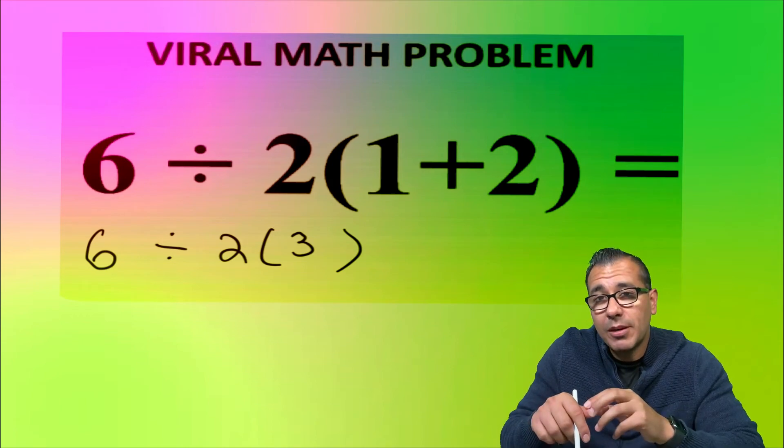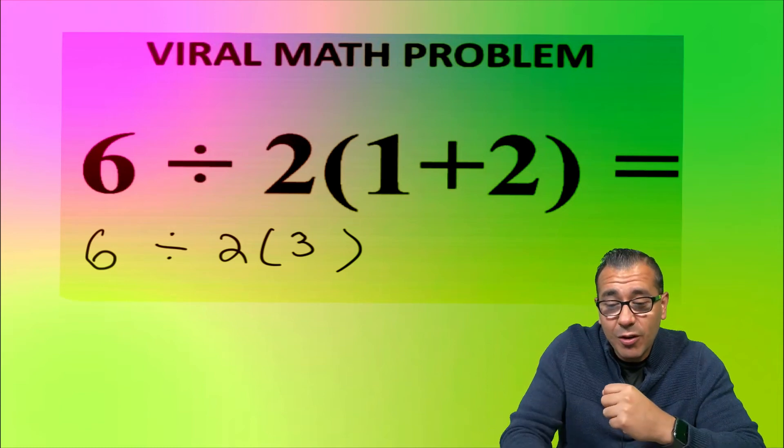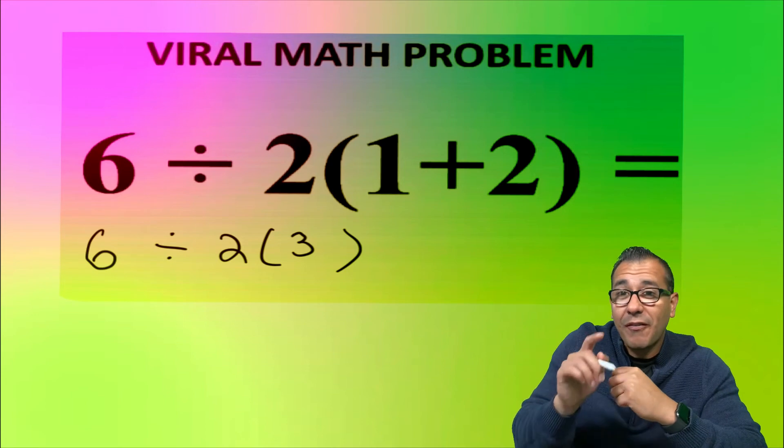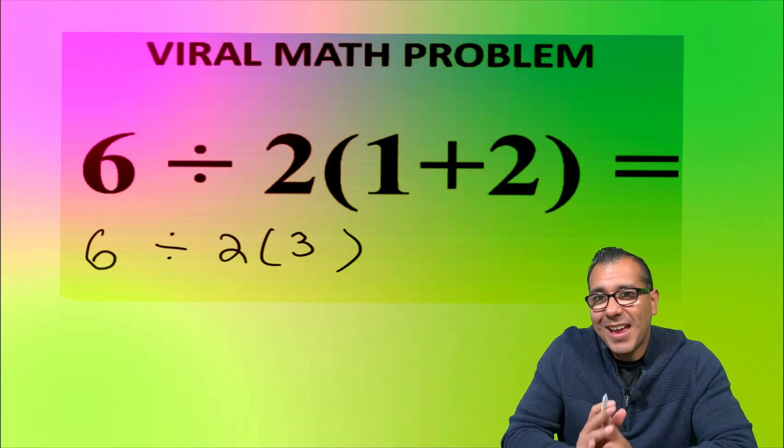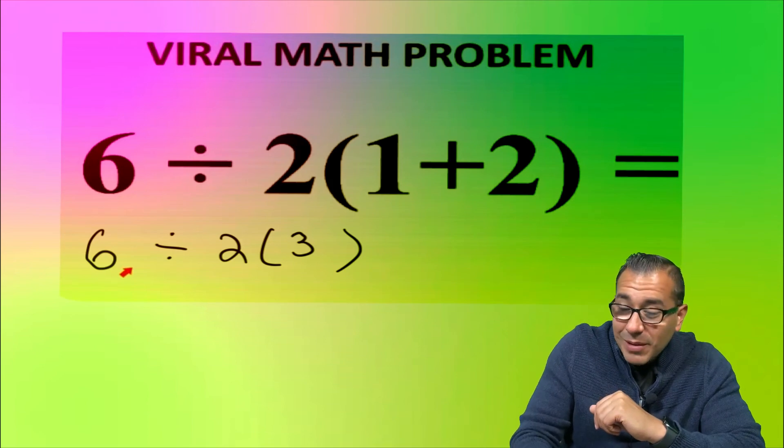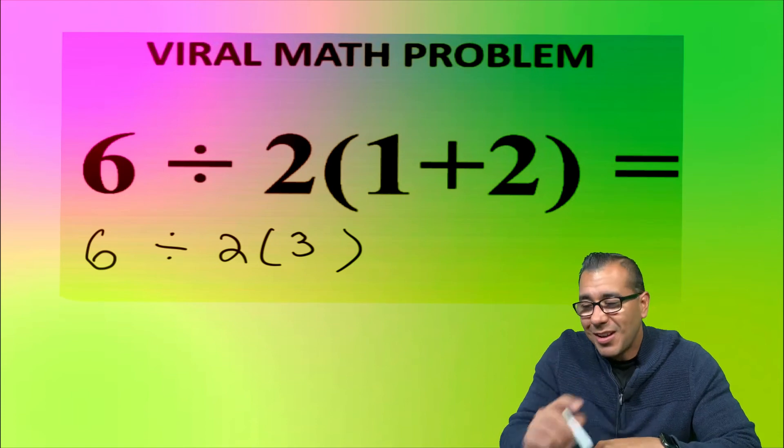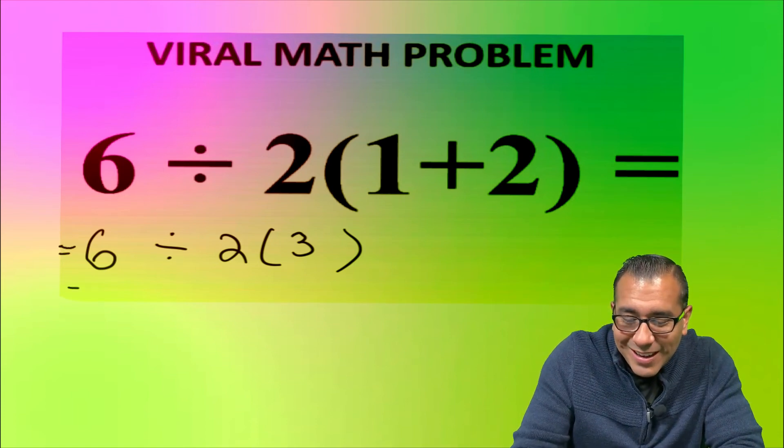Next step: we look for multiplication or division, whichever one you see first from left to right. That's the key: from left to right. Make sure you have that down straight. From left to right, we see that the division comes first. Again, write this down because this is the part most people aren't getting.